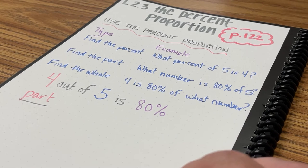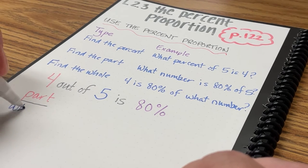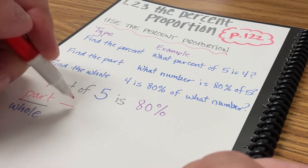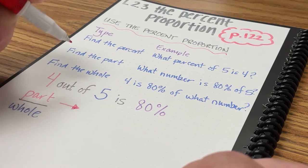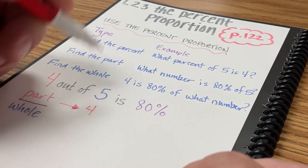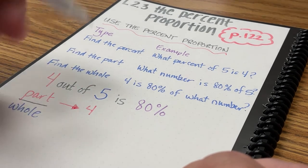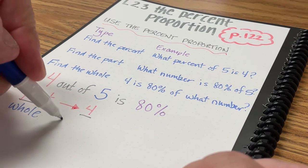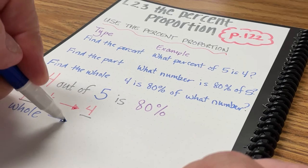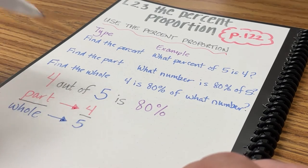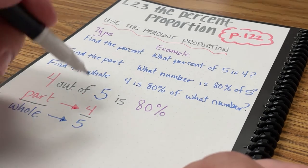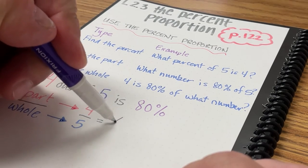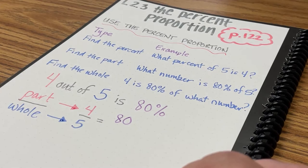So now I want to think about this as a proportion. I have the part over the whole, and in this case my part is 4, over my whole, which is 5, and that's going to equal 80 over 100, which is the same thing as 80%.